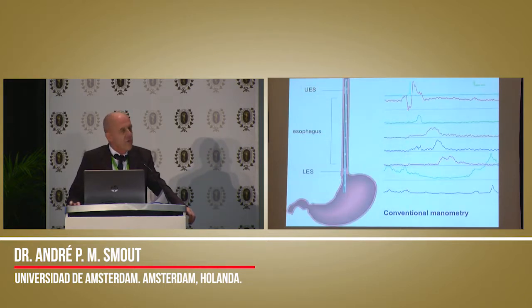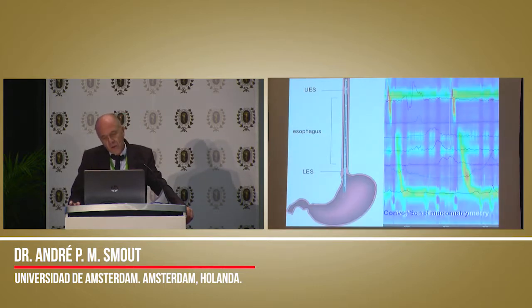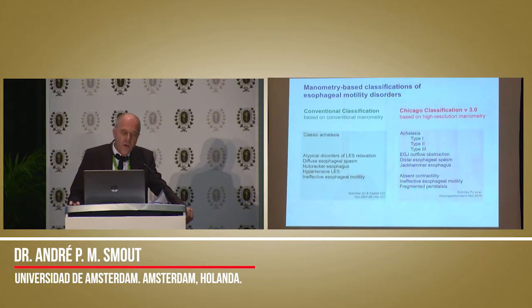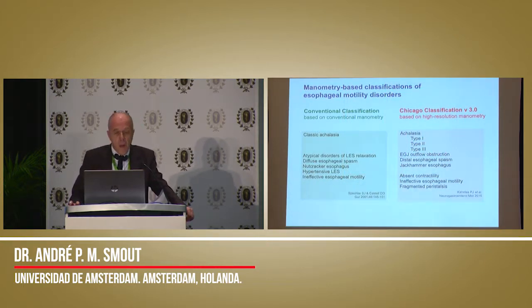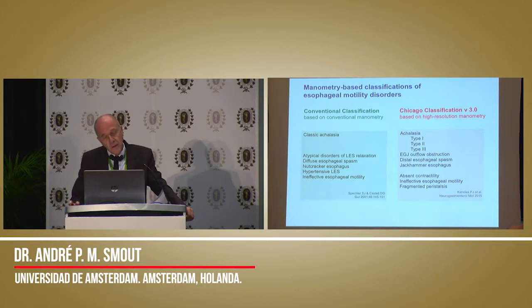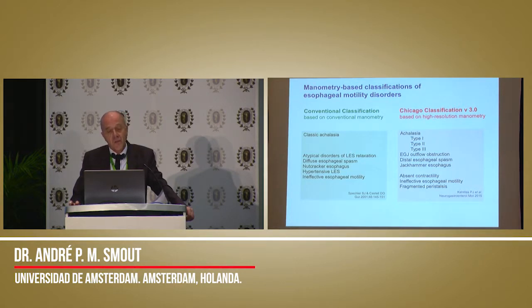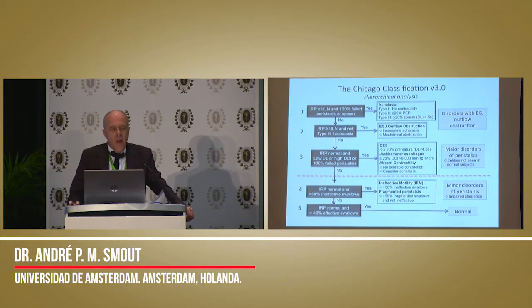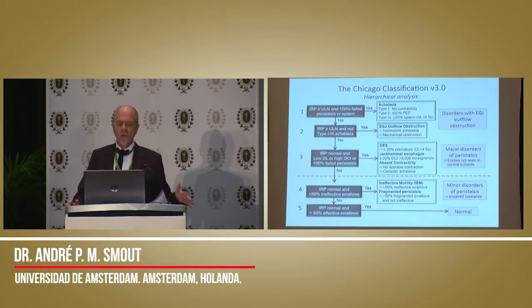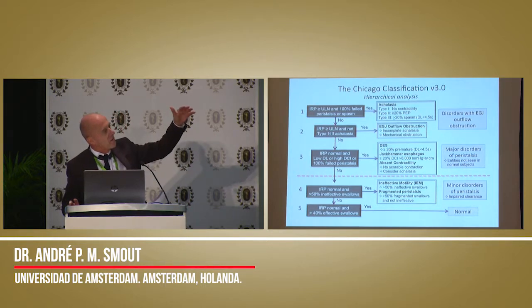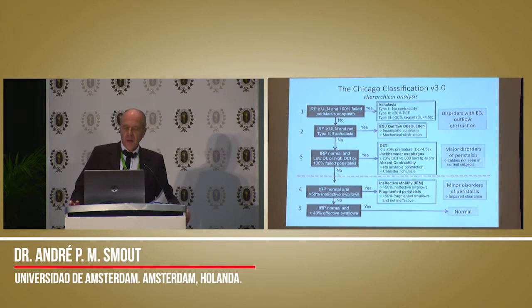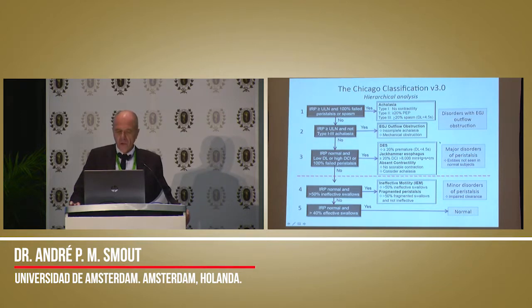Esophageal manometry should be done and we should look for significant esophageal dysmotility. In the old days we used conventional manometry. Nowadays we have totally switched to high resolution manometry, and we no longer use the conventional classification. We now use Chicago 3, which is also beautiful but a bit different. I can predict that in a few years there will be Chicago 4 and 5, because there are errors in Chicago 3. The beauty of the Chicago classification is that it is hierarchical — you work from the top to the bottom. You first look for the sphincter, whether it relaxes or not, and you make a diagnosis of achalasia or EGJ outflow obstruction.